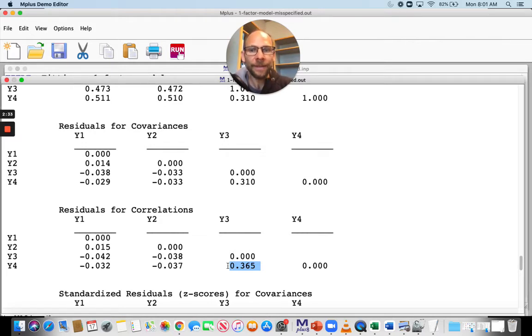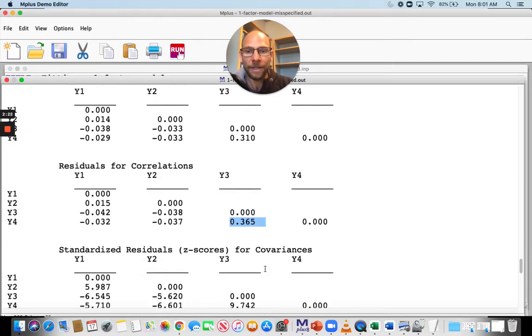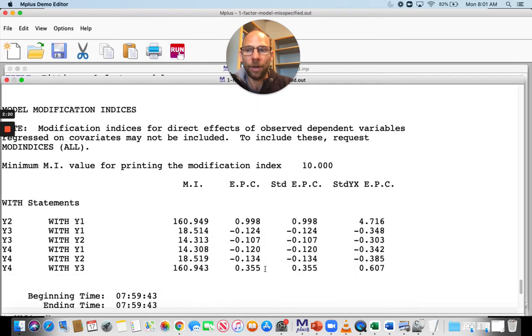This can be helpful to detect problems when you find that there's a very substantial residual association here that this model does not explain. Another way you can see this in Mplus is by looking at model modification indices, which are reported here.